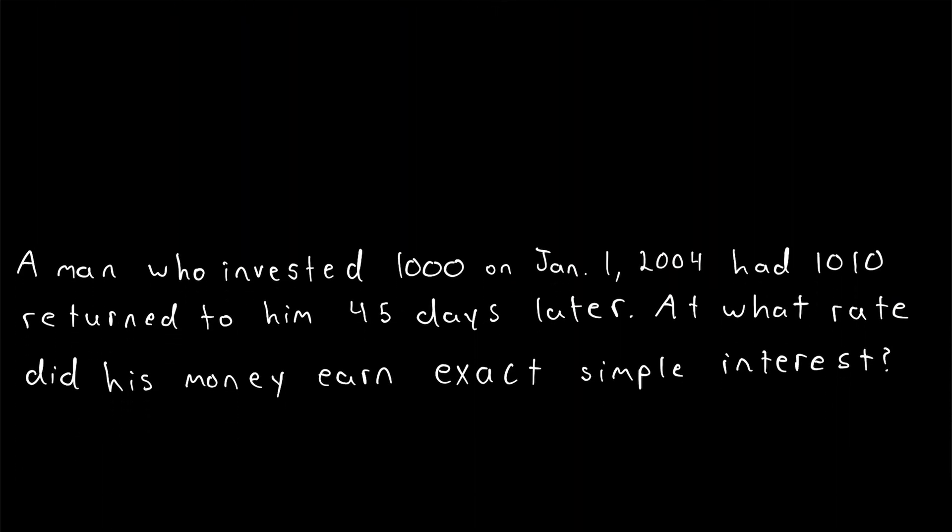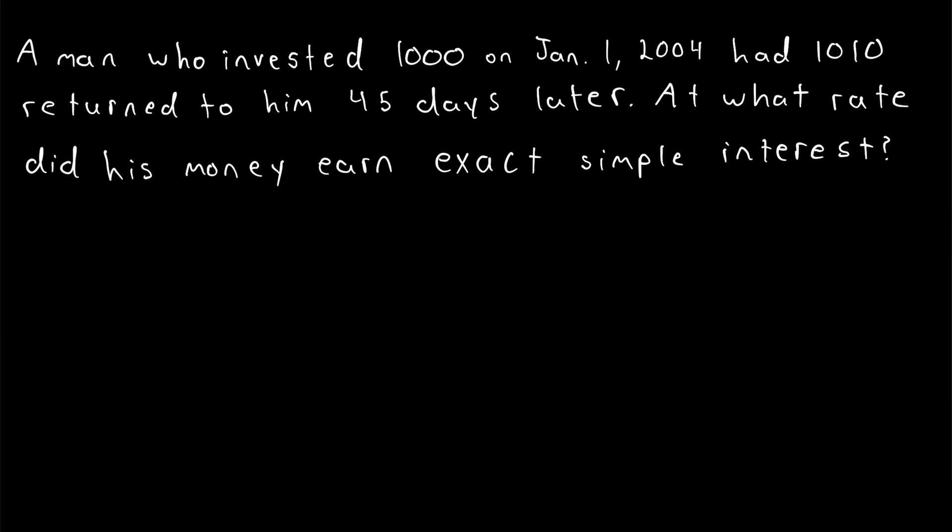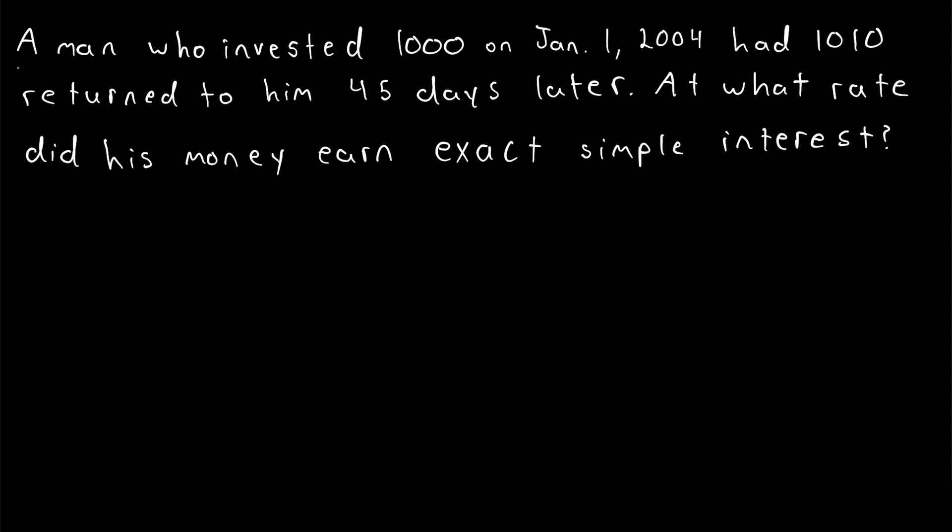Alright, let's do one more example. Again, give this one a go yourself before watching the solution. A man who invested 1,000 on January 1st, 2004, had 1,010 returned to him 45 days later. At what rate did his money earn exact simple interest?